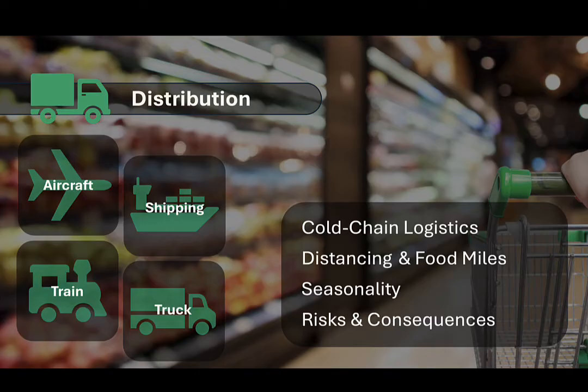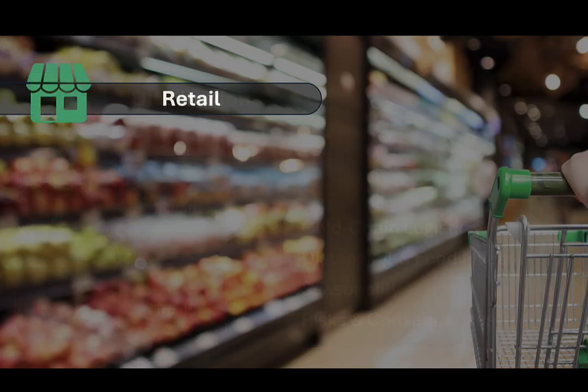But the environmental impact of other transportation methods, particularly air transport, is much greater. The retail stage of the food supply chain is the point where food products are sold to the consumer. This stage divides into two categories, broadly centering on food at home and food away from home.